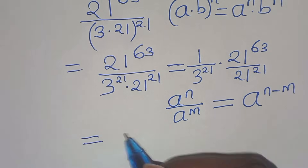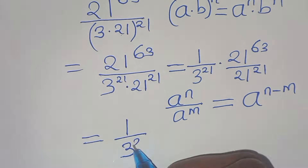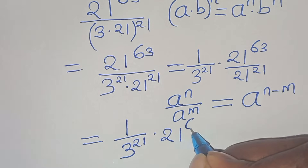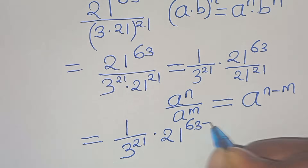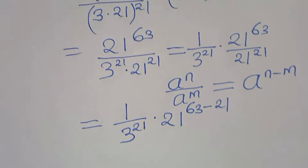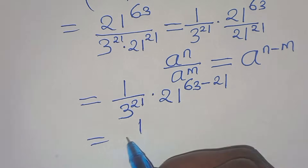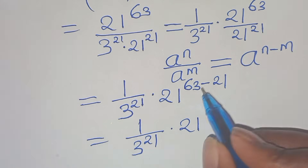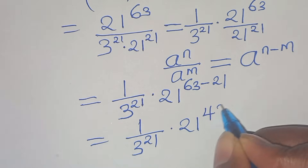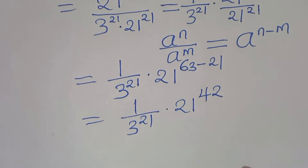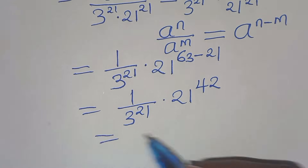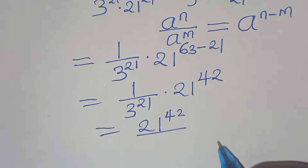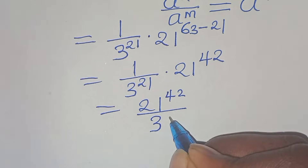Applying this exponent property, we have 1 over 3 to the power of 21 multiplied by 21 raised to the power of c×3 minus 21. This equals 1 over 3 to the power of 21 multiplied by 21 raised to the power of c×3 minus 21, giving us 21 raised to the power of 42 divided by 3 to the power of 21.